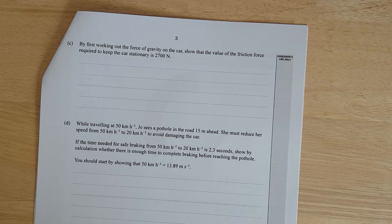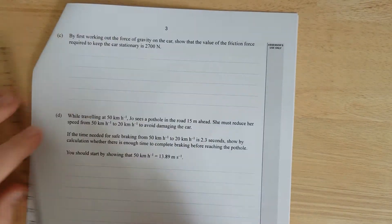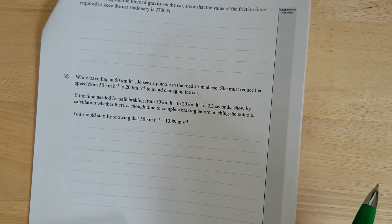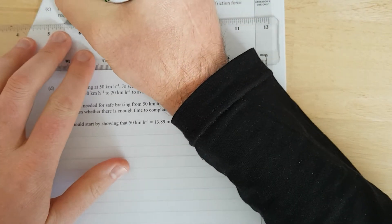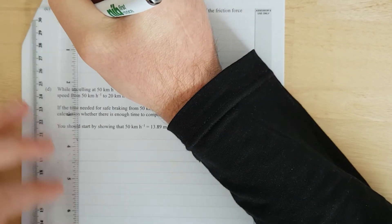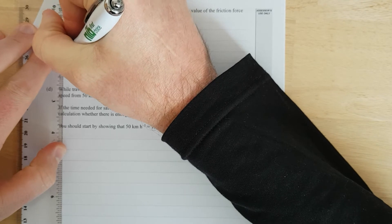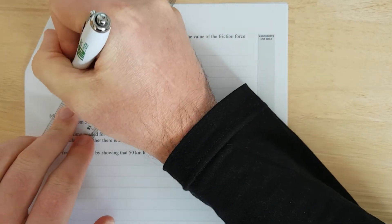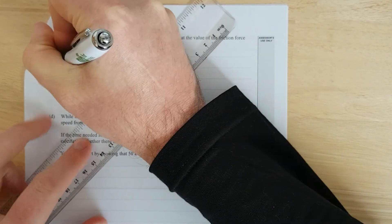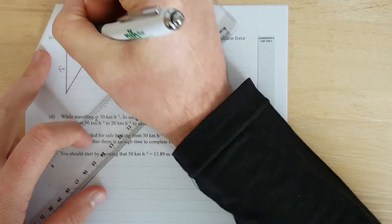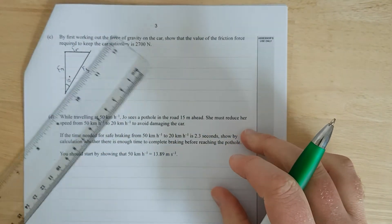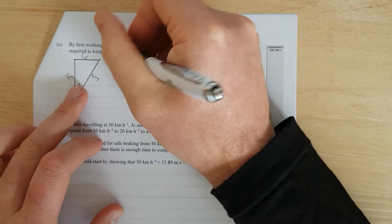By first working out the force of gravity on the car, show that the value of the friction force required to keep the car stationary is 2,700 N. We'll just draw that triangle. We're going to have the friction force, the normal force, and the hypotenuse is going to be our gravitational force. This is FG, this is FN, this is FR, and this is 10 degrees.